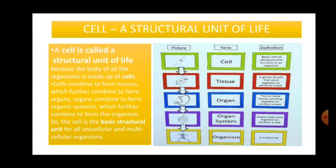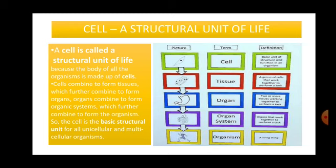Why is a cell called a structural unit of life? A cell is called a structural unit of life because the body of all organisms is made up of cells. Cells combine to form tissues, tissues combine to form organs, organs combine to form organ systems, and organ systems constitute an organism — like human beings or other animals. So the cell is the basic structural unit of all unicellular and multicellular organisms.